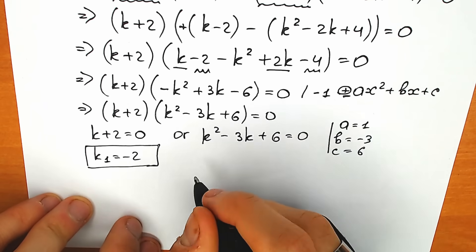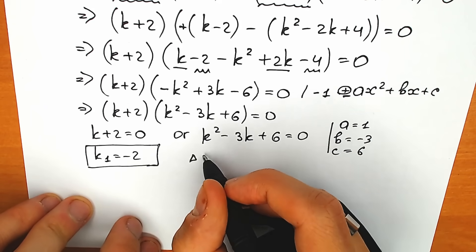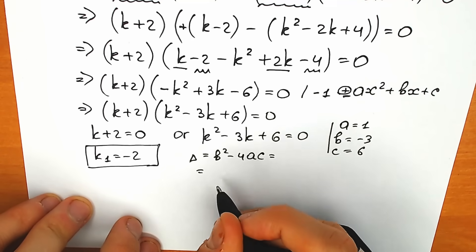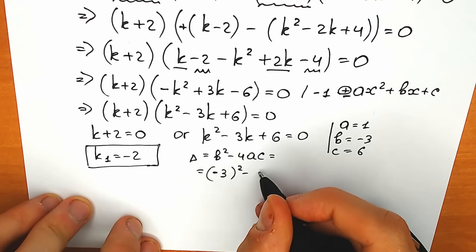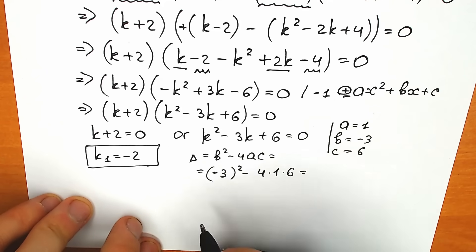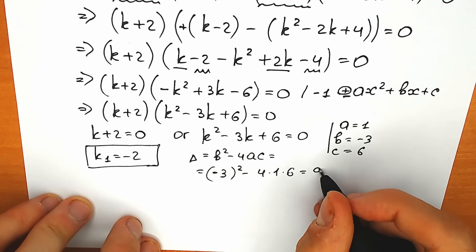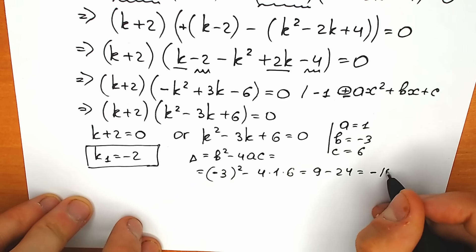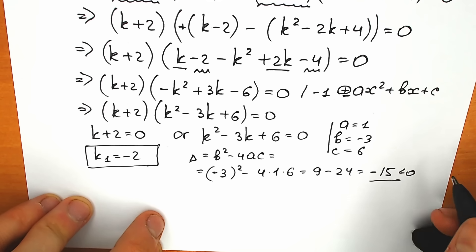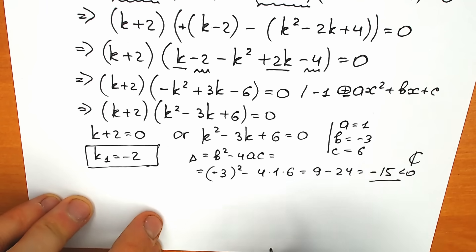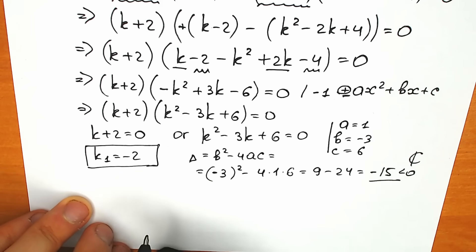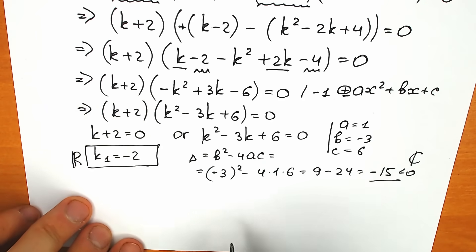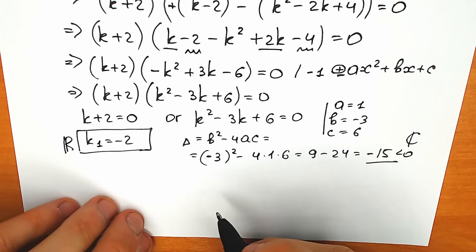Plugging into the discriminant formula: D equals b-squared minus 4ac equals (minus 3)-squared minus 4 times 1 times 6, which gives 9 minus 24 equals minus 15. So our discriminant equals minus 15, which is less than zero. This means we're going to have two complex roots from this part.